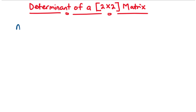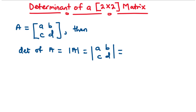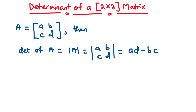Given that matrix A is equal to A, B, C, D, then the determinant of matrix A, which is given by the absolute value of A, is equal to A times D minus B times C. So to find the determinant of a matrix, we basically multiply the values A and D and subtract the product of B and C. So that is AD minus BC.